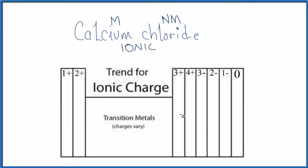Skip the transition metals. Three plus, then we go three minus, two minus, one minus, and zero. So we said calcium was right here. That's going to be two plus. And chlorine was over here in group 17. That's going to be one minus. So we know the charges.